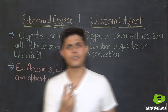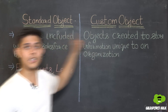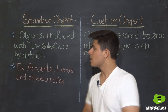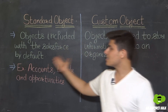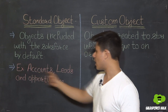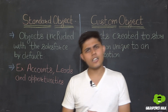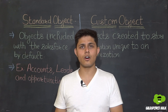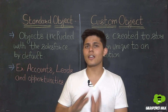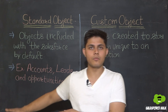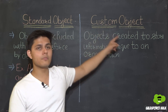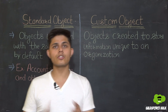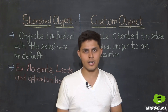There are two types of objects in Salesforce: standard objects and custom objects. Standard objects are included within Salesforce by default, like accounts, leads, and opportunities — objects already created in the Salesforce org by Salesforce itself, which you cannot delete. Whereas custom objects are objects you create to store custom information unique to your business or organization.